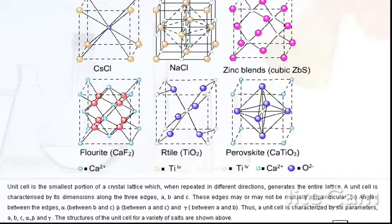Unit cells. Unit cell is the smallest portion of a crystal lattice which, when repeated in different directions, generates the entire lattice. A unit cell is characterized by its dimensions along the three edges A, B, and C. These edges may or may not be mutually perpendicular.